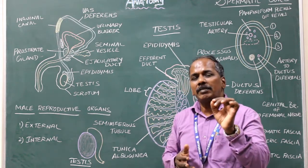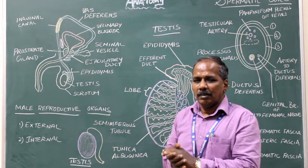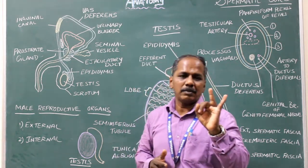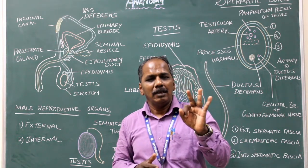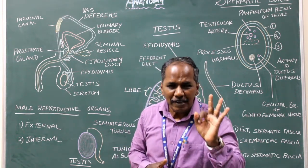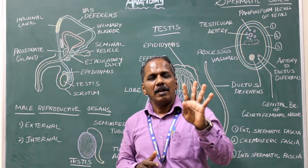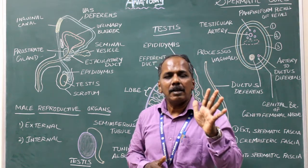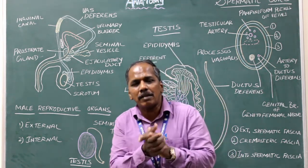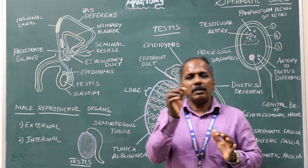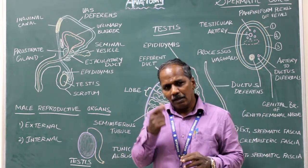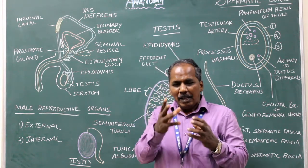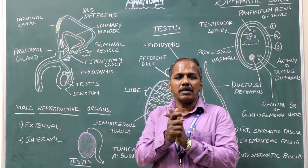Layers of scrotum. Number 1: Skin. Number 2: Dartos muscle. Number 3: External spermatic fascia. Number 4: Cremasteric muscle and fascia. Number 5: Internal spermatic fascia. These are the layers which constitute the thickness of the scrotum. The dartos muscle is responsible for the stretching and shrinking of the skin of the scrotum.